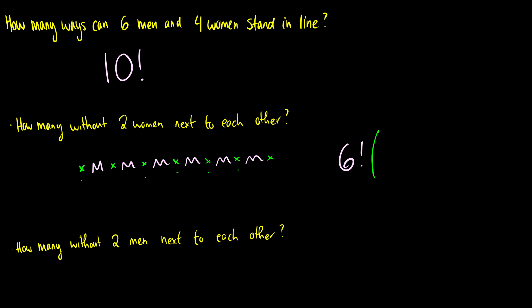And how many women are we ordering? Well, we're ordering seven women. So now there's seven choose four ways to choose the spots where the women are going to stand.